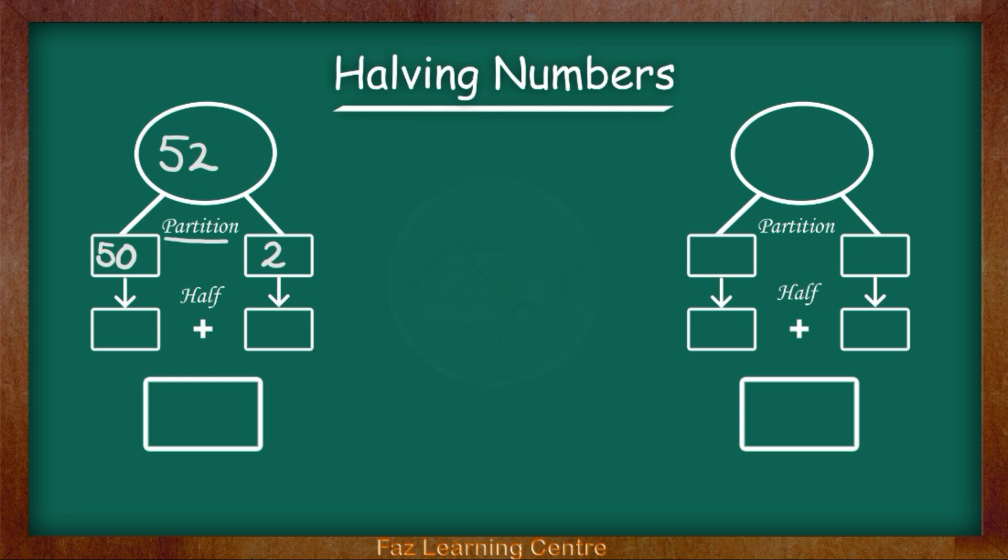Now we have to halve both of the numbers. As we have partitioned it, now we need to halve. Half of 50 is 25. Half of 2 is 1. Now we are going to add these and that is our answer. 25 add 1 is 26.